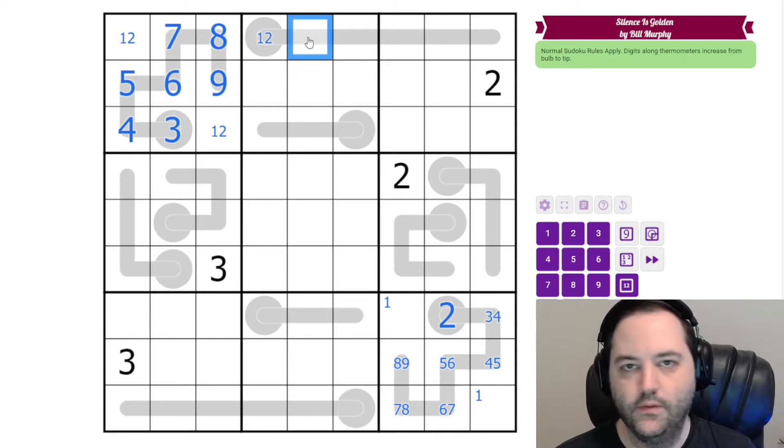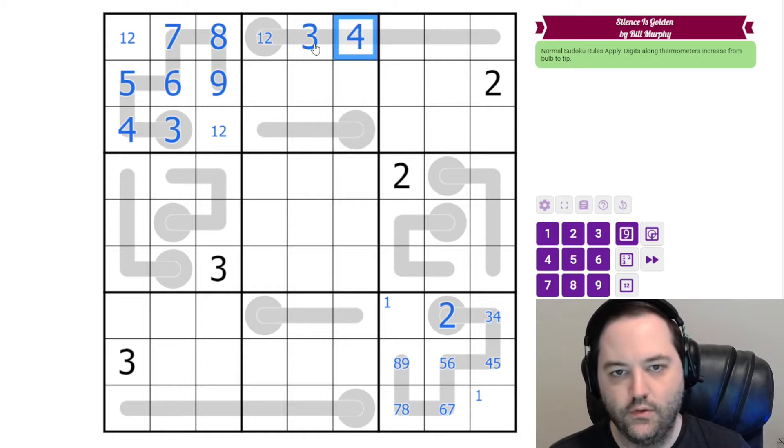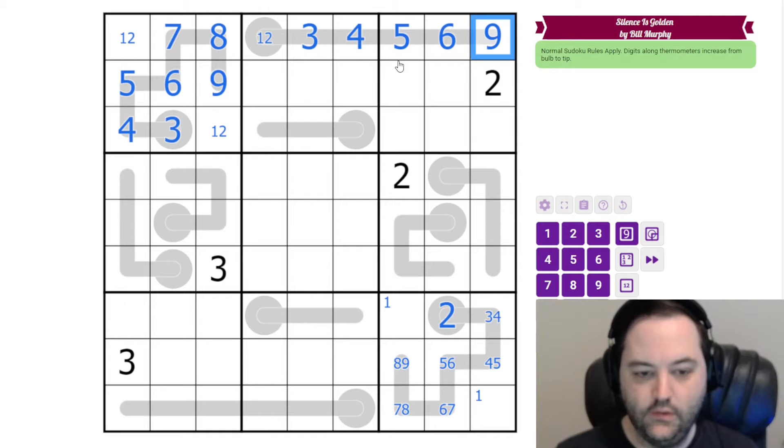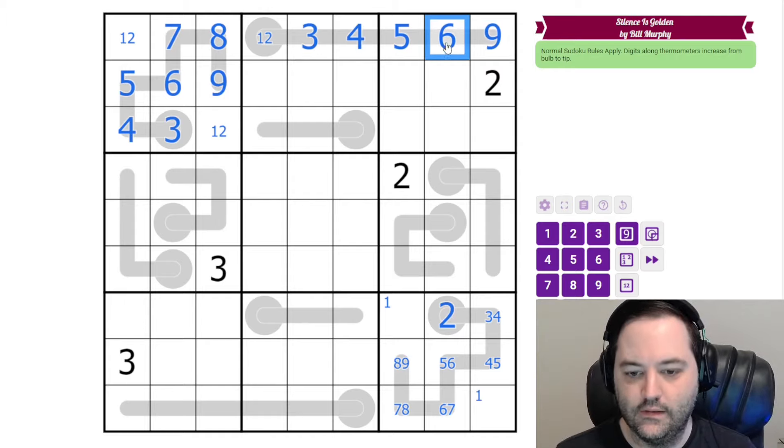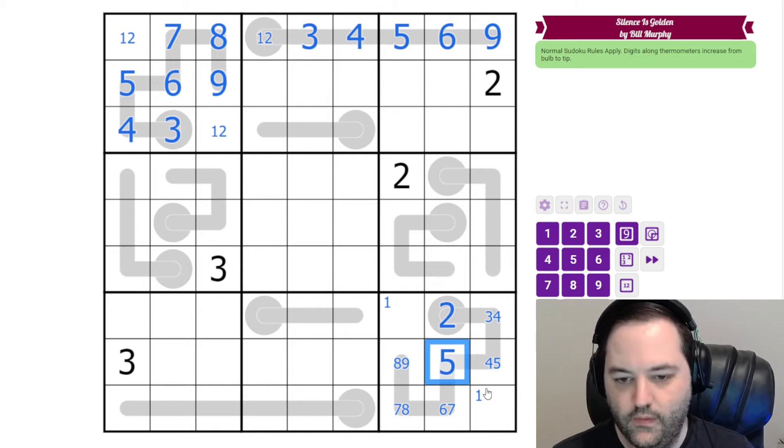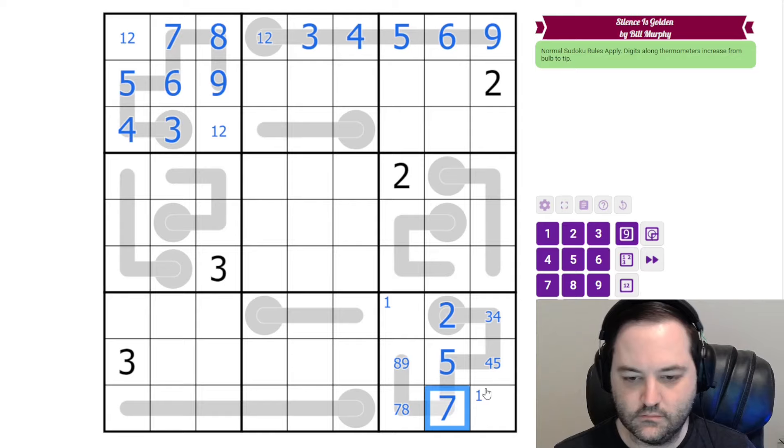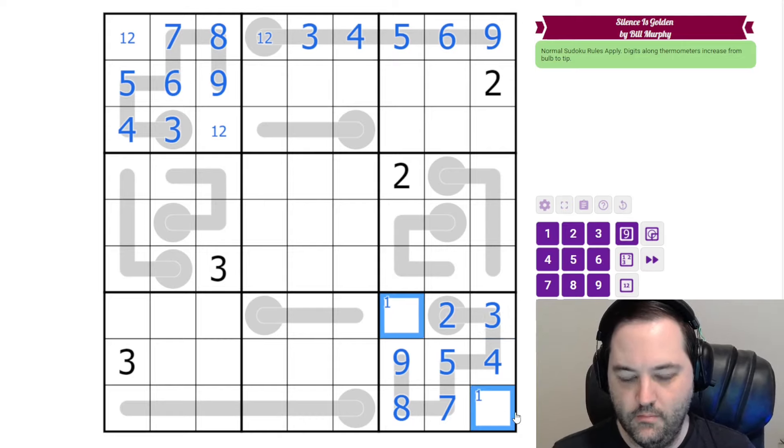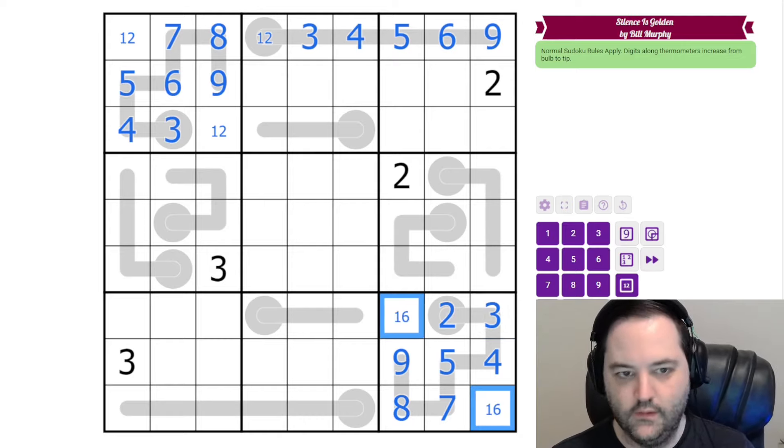And now we can just fill in the rest of the row because we have our one, two, we have seven, eight. The remaining digits are three, four, five, six, and nine. And they have to increase. And that six is going to look down here and complete this thermo. So that has to be five. This has to be seven. And going up from the seven, we get eight and nine. Going down from the five, we get four and three. And our remaining digits in the box are one and six.